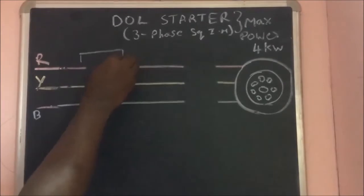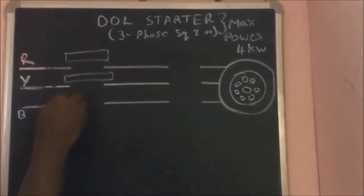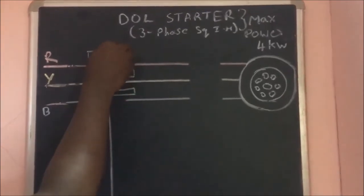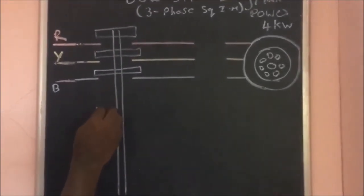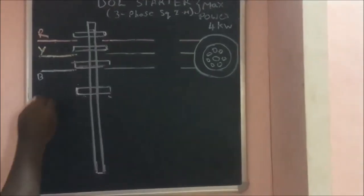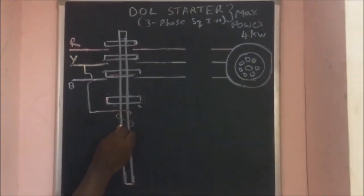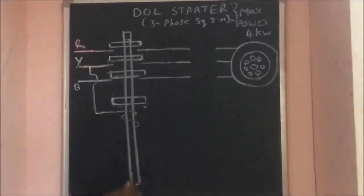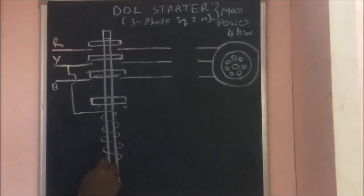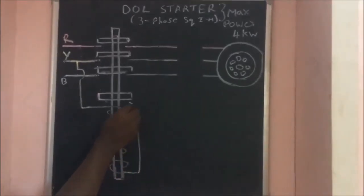Then erase the left side and right side as shown on the board. Next, make four rectangular boxes on the left side over the horizontal lines as shown on the blackboard. Then draw two vertical lines in between the rectangular boxes. Start a line from any one phase going to the bottom of the rectangular box on the left side.